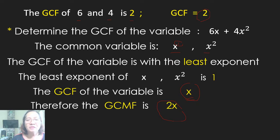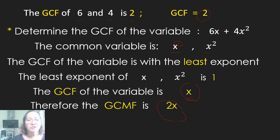Next, determine the GCMF of the variables. The common variable is x to the first and x squared. The GCMF of the variable is the one with the least exponent. The least exponent between x to the first and x squared is 1, so the GCMF of the variable is x. Therefore, the Greatest Common Monomial Factor is 2 times x, which is 2x.